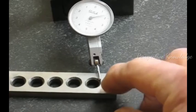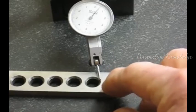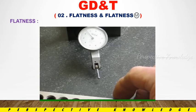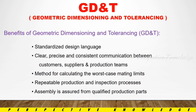Check the dial gauge readings at the edges and across the surface. Record the values after setting the zero reference. This completes the flatness measurement process using a dial gauge.